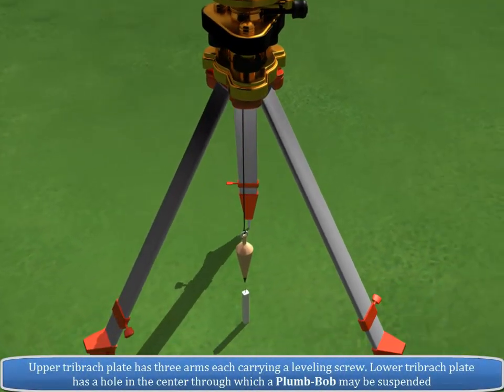The upper tribrach plate has three arms, each carrying a leveling screw. The lower tribrach plate has a hole in the center through which a plumb bob may be suspended.